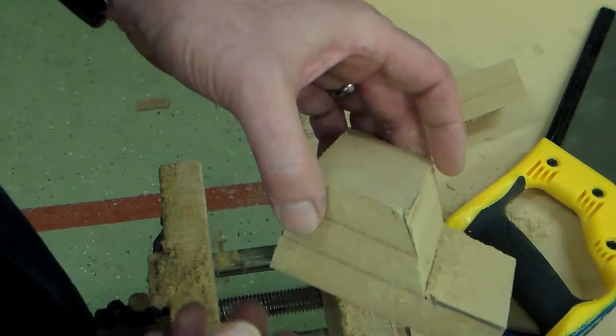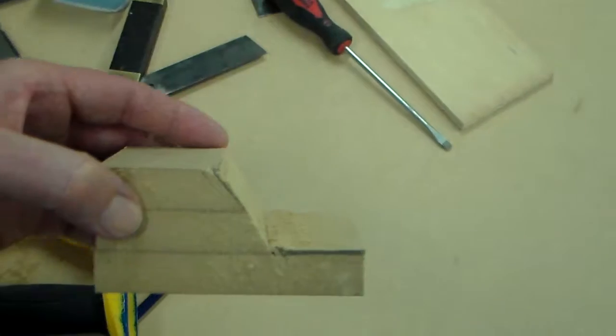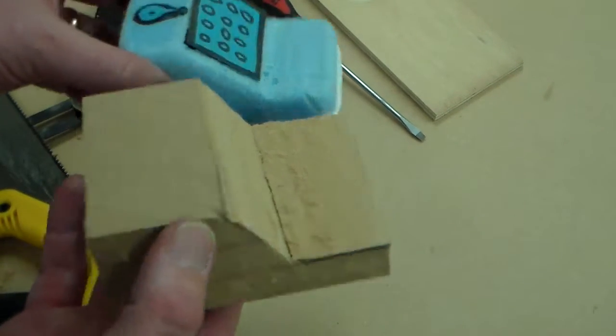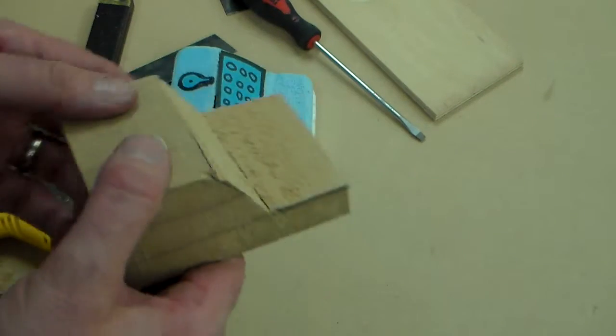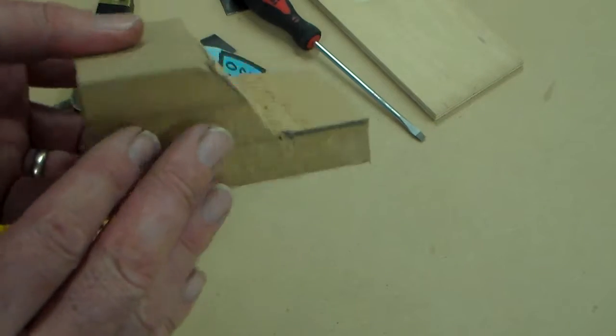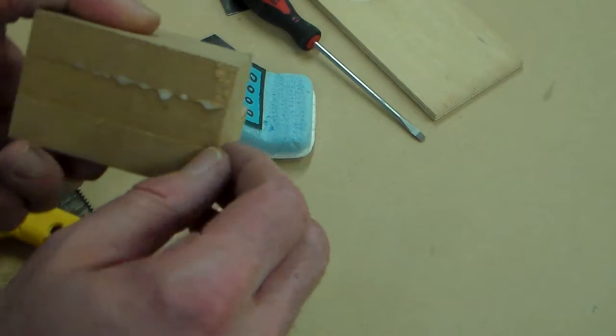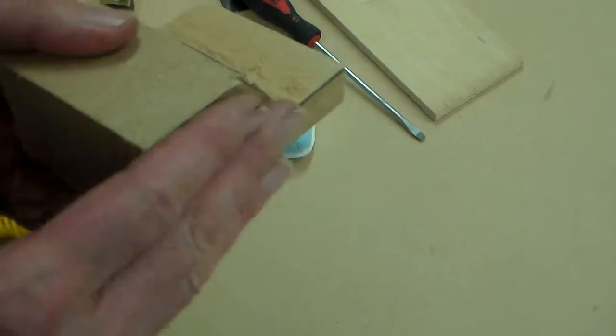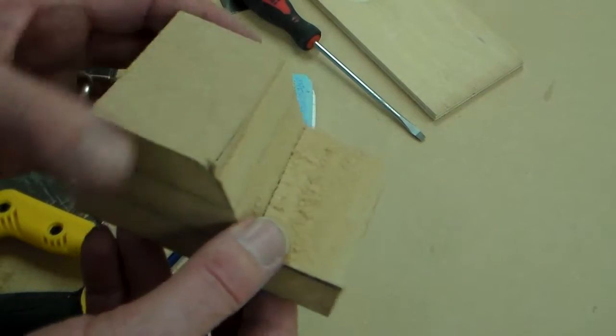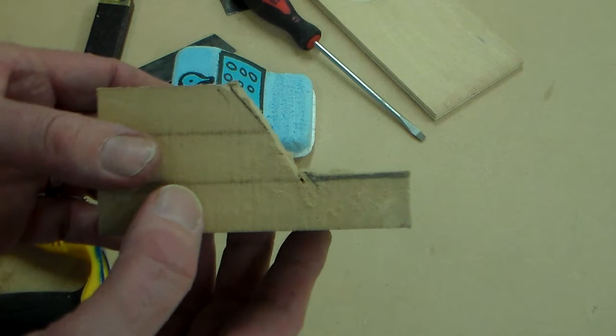There. So, if we look now, when compared to our original, we've started to get the shape. Now, remember, on these sides here, we still need to put a 10 degree release angle. Now, that's probably best done using the band facer. And I'll show you that in the next clip.